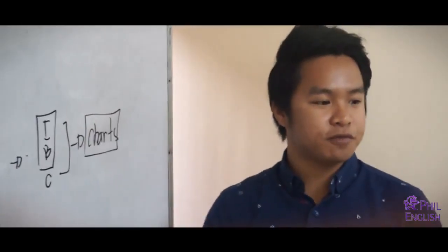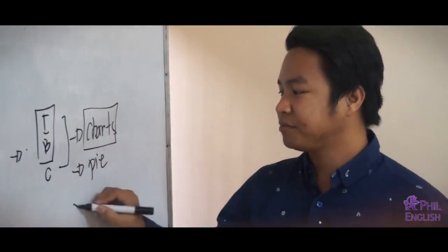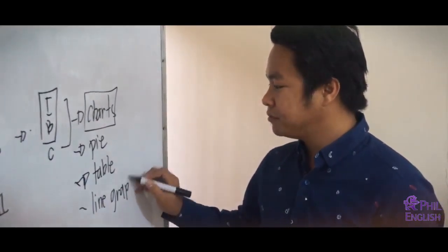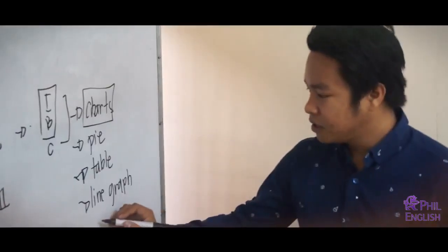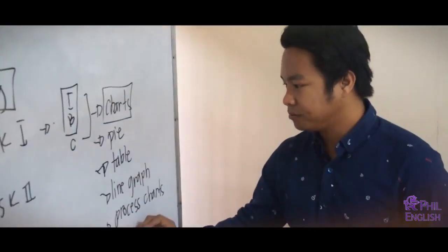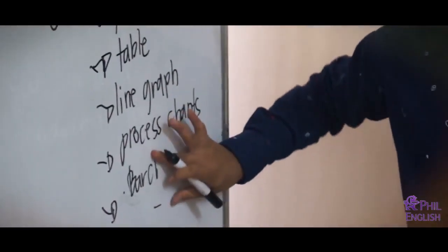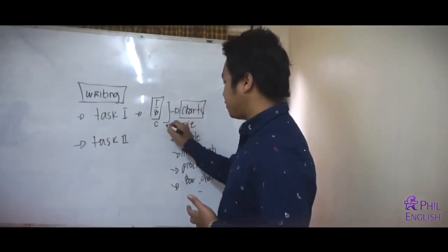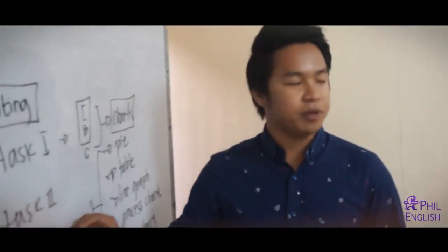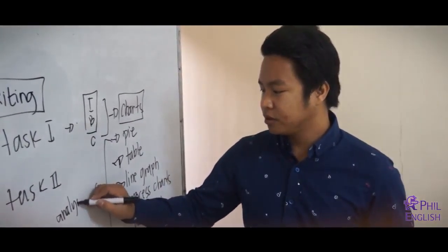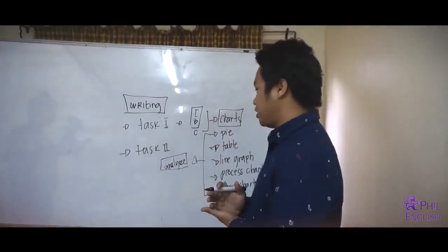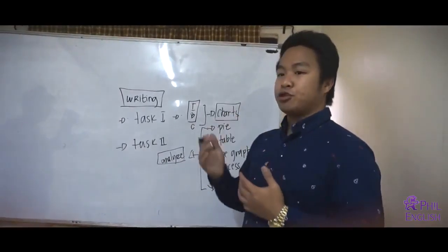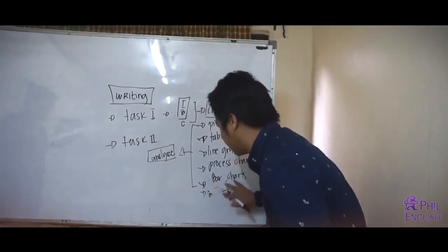We have different kinds of charts, such as pie, table, line graph, process charts, and bar charts. It is very hard for them to do because we need to analyze them. The most important thing is for you to understand the different charts or the table in order to write very well. And we still have B combinations.